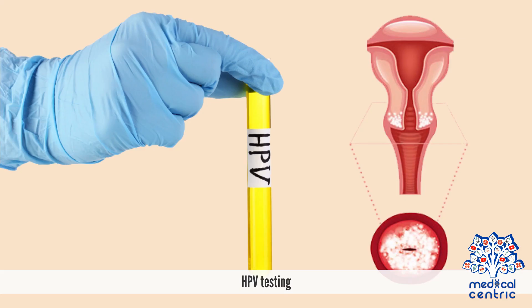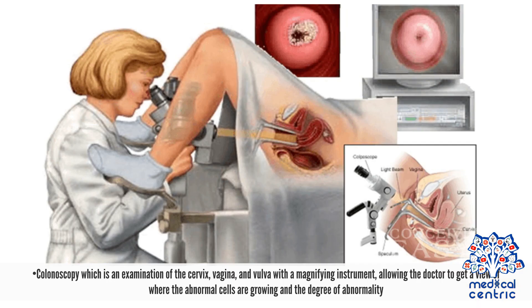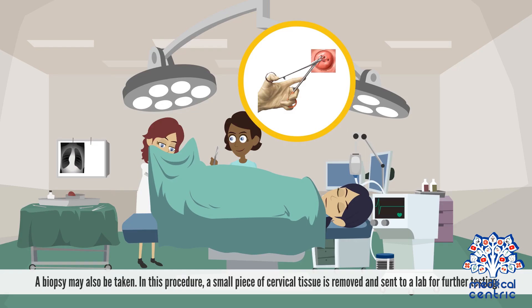Your doctor may then recommend more tests, including HPV testing and colposcopy, which is an examination of the cervix, vagina, and vulva with a magnifying instrument, allowing the doctor to get a view of where the abnormal cells are growing and the degree of abnormality. A biopsy may also be taken, in which a small piece of cervical tissue is removed and sent to a lab for further testing.